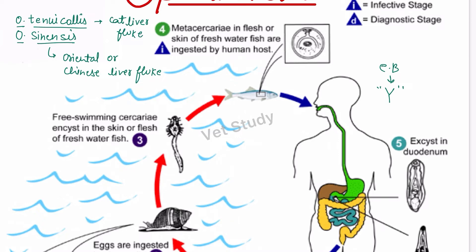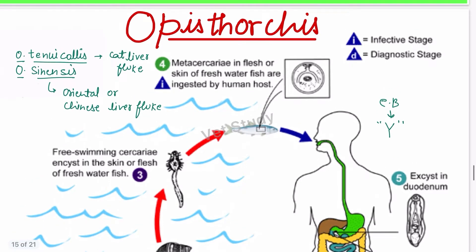There are two species in Opisthorchus: Opisthorchus tenuicollis and Opisthorchus sinensis. Opisthorchus tenuicollis is also called the cat liver fluke, and Opisthorchus sinensis is the oriental or Chinese liver fluke. These common names are frequently asked in exams.